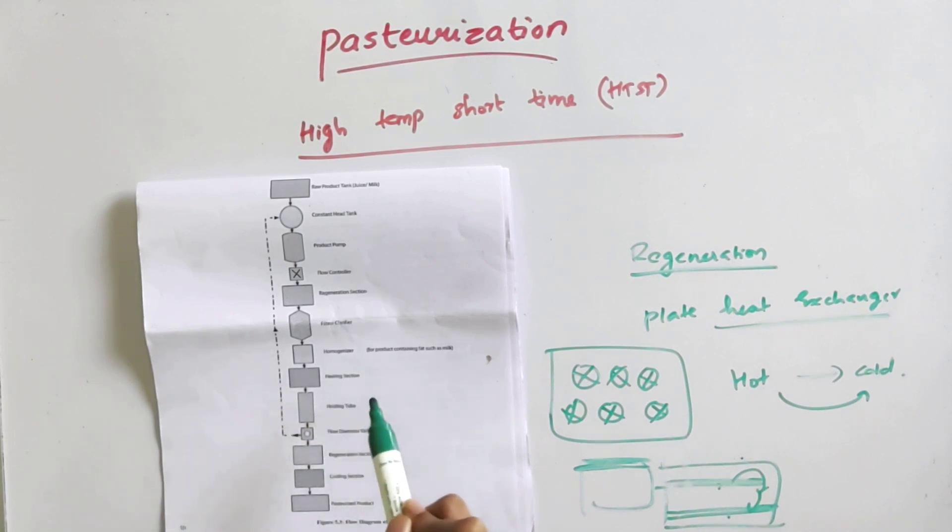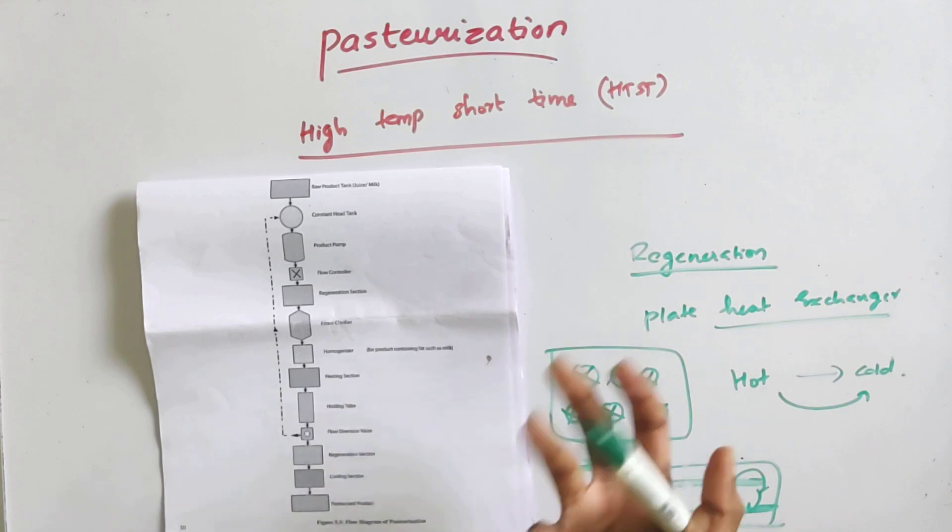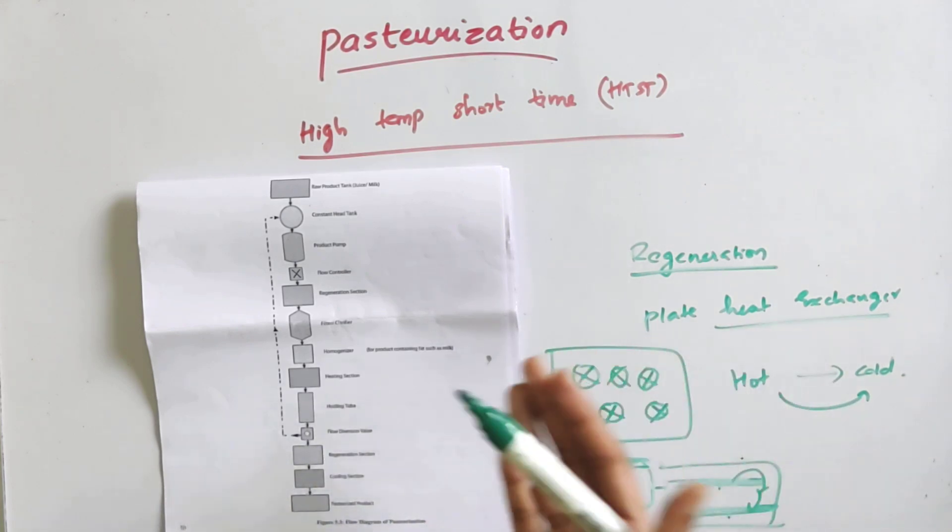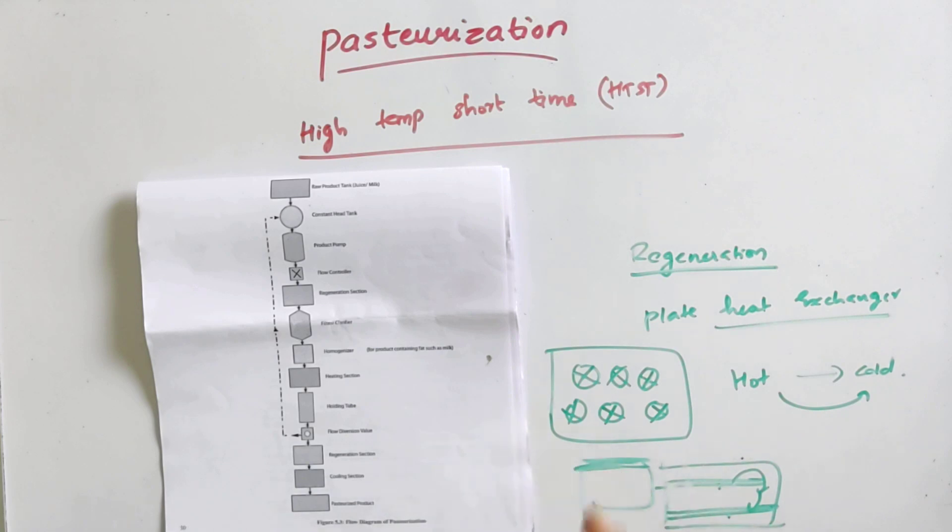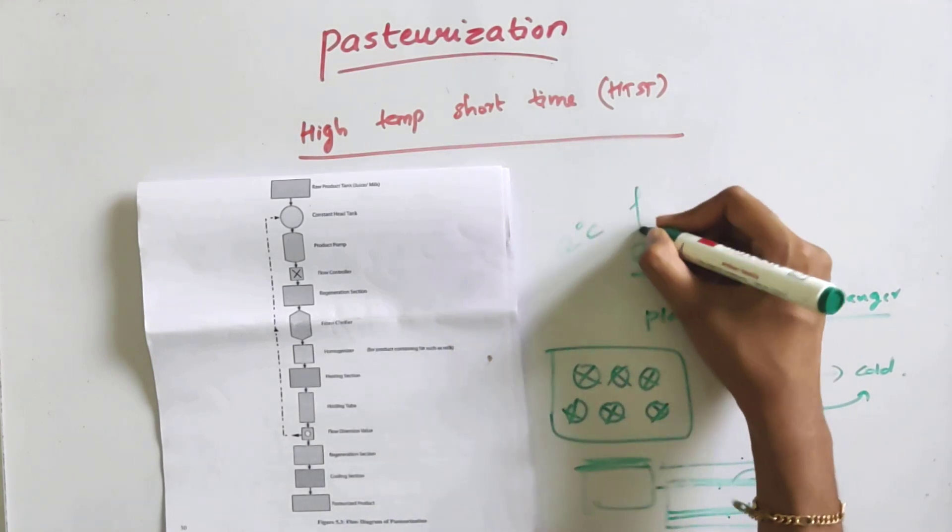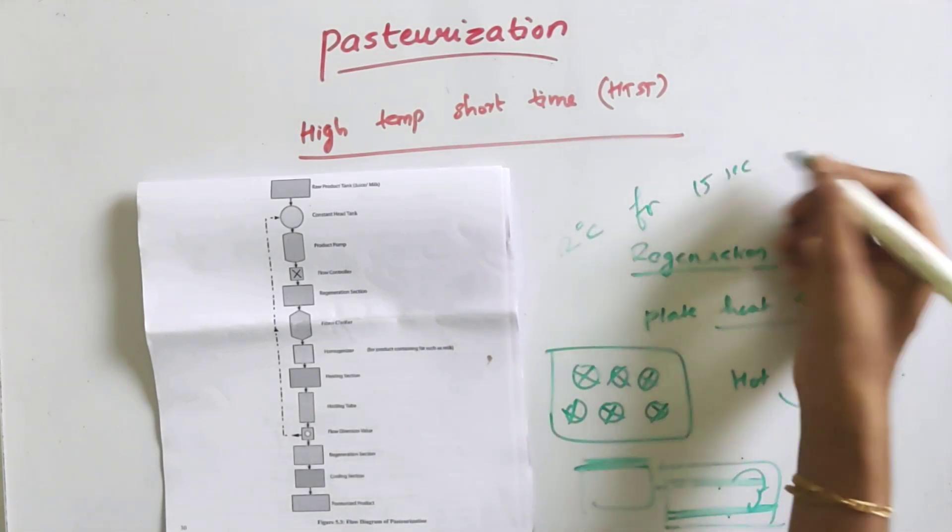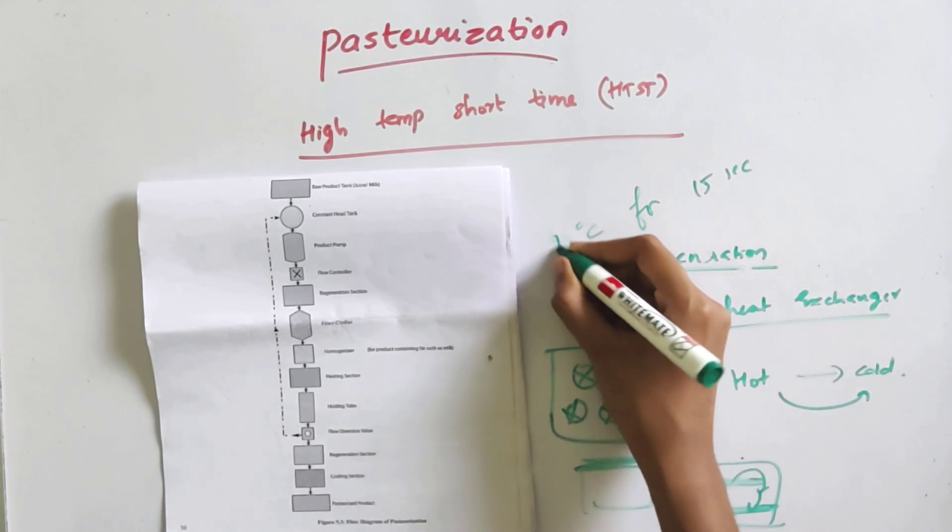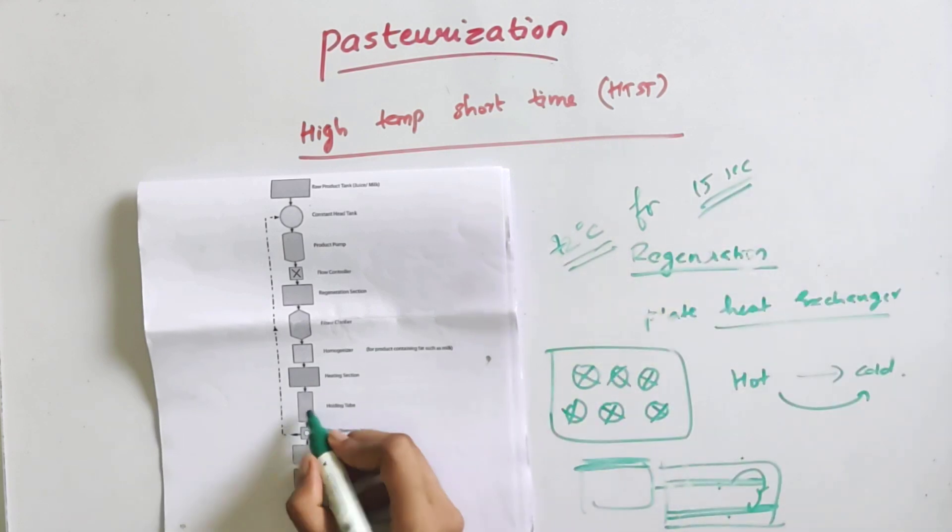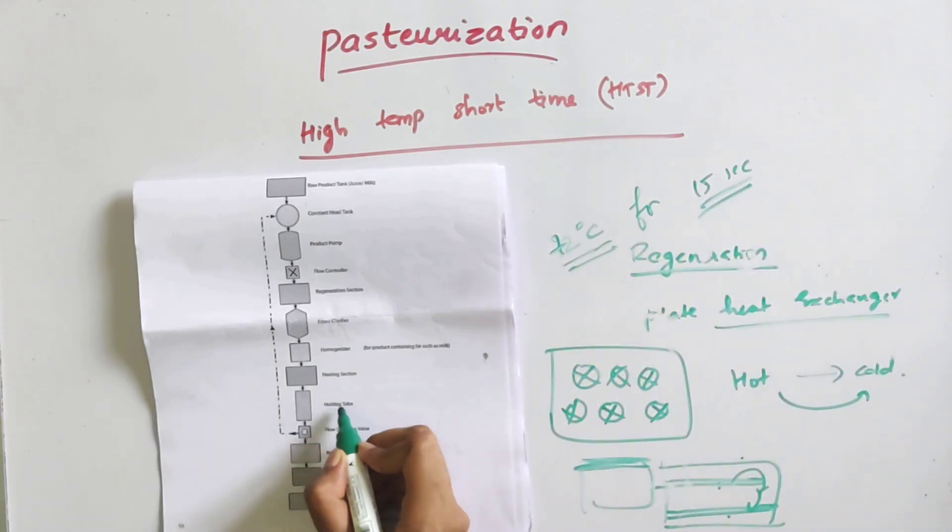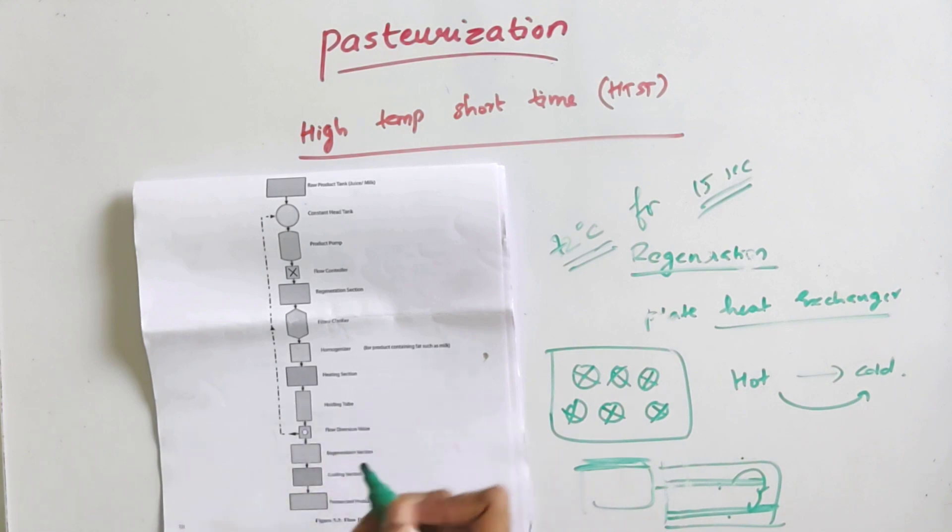The next section is the heating section. I already said that we need to heat the milk to 72 degrees Celsius. When we heat to 72 degrees, we add the necessary heat in the heating section. Then we need to hold it at 72 degrees Celsius for 15 seconds, so it will hold in a holding tube.